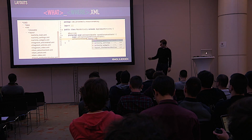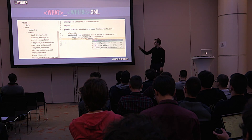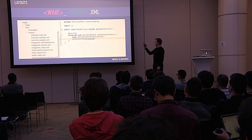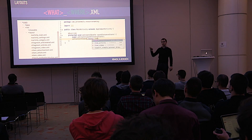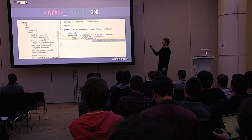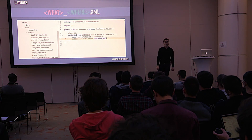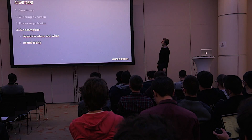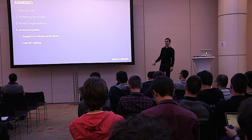Let's see how this looks. We get nice folder organizing — all of the activities, all of the fragments, all of the items are nicely grouped together. For autocomplete in a main activity, you just say setContentView, list all of the layouts, and then filter: give me all of the activities, give me all of the fragments, give me all of the items, give me all of the views. It's very convenient. But we can also use camel casing because we have the underscore, just the way we do with source code — so AS for activity_settings, AM for activity_main. We're really getting the most out of Android Studio autocomplete. That's why the underscores come in.